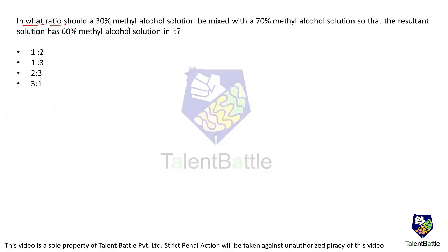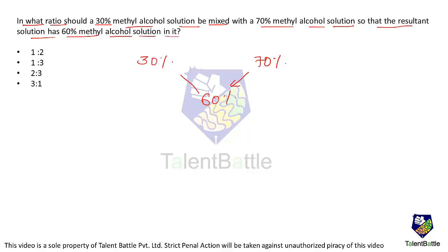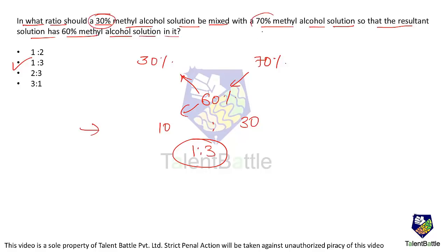Sample Q4 — Mixture (Allegation): In what ratio should a 30% methyl alcohol solution be mixed with a 70% methyl alcohol solution to get a 60% resultant solution? Using the allegation method: the difference between the stronger solution and the mean is 70 − 60 = 10, and the difference between the mean and the weaker solution is 60 − 30 = 30. So the ratio is 10:30 = 1:3. One part of the 30% solution mixed with three parts of the 70% solution gives 60%.